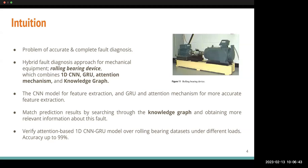This research focuses on accurate and complete fault diagnosis. The researchers propose a hybrid fault diagnosis approach for mechanical equipment — specifically a rolling bearing device. This approach combines a 1D-CNN, GRU, attention mechanism, and knowledge graphs. The CNN and GRU are used for feature extraction, while the knowledge graph is used for obtaining more relevant information about the faults.